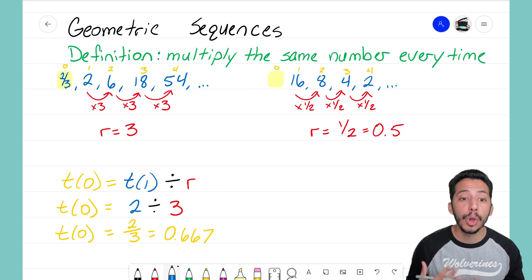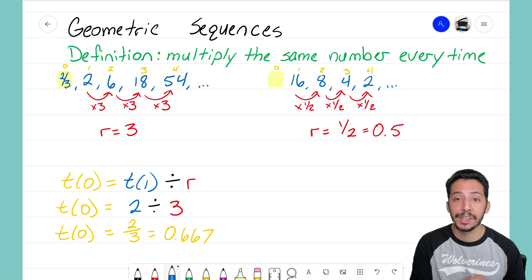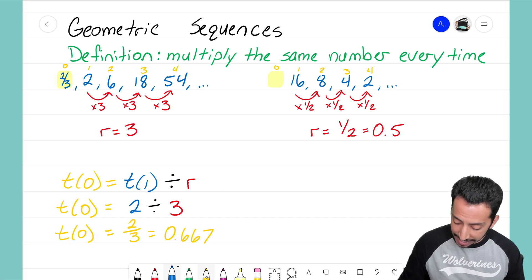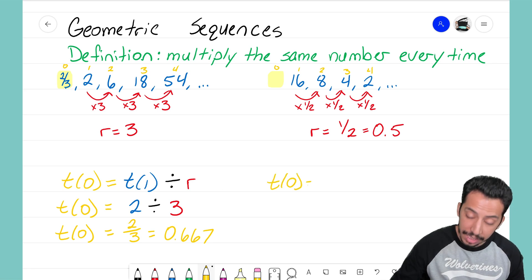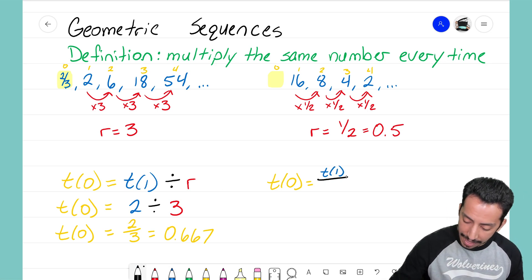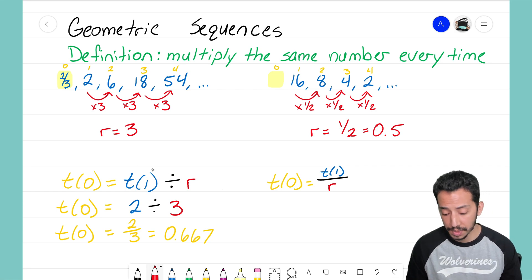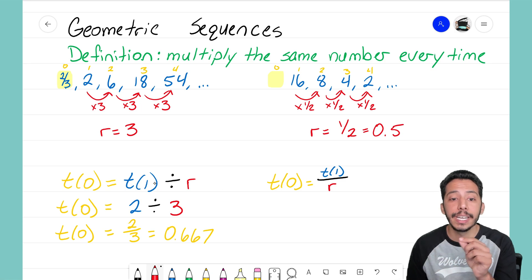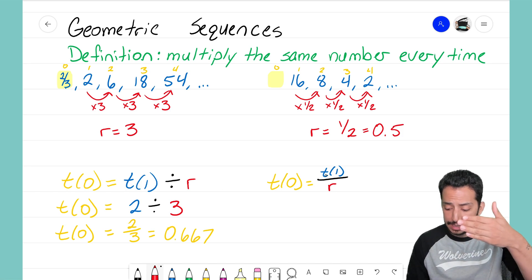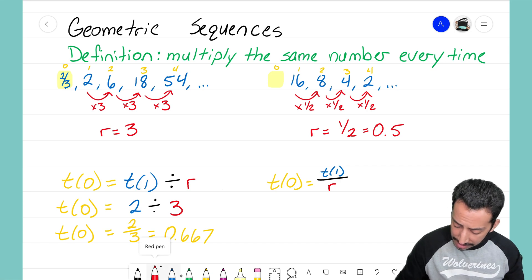We can always check our work. If I take two thirds and multiply it by 3, that 3 on the bottom will cancel and we'll be left with a 2. That's how you find the zero term when you know your common ratio - just take that first term and divide it by the common ratio. Let's do it one more time for the sequence on the right.